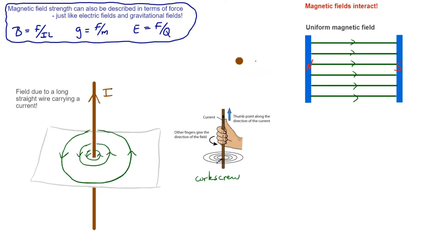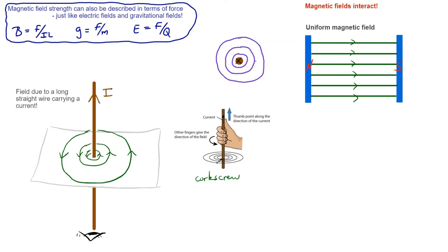Now let's imagine we have a current-carrying conductor going into the screen — we're looking up along the end of this wire. The current is going away from us, which is sometimes drawn as a cross in textbooks, like the tail feathers of a dart moving away from us. We know the field is going to look like circles around the wire. Using the corkscrew rule — with the current going into the screen — you should find that the circles are going clockwise.